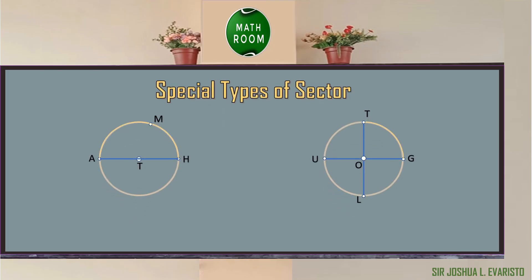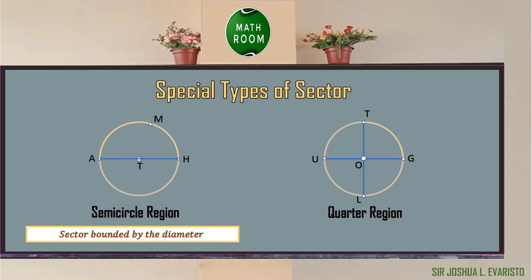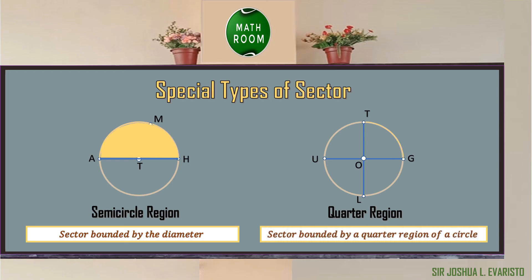We have two special types of sector: the semicircle region and the quarter region. The semicircle region is a sector bounded by the diameter. In figure 1, the yellow region is an example of a semicircle region bounded by angle ATH and arc AMH. In figure 2, the yellow region is an example of a semicircle region bounded by angle TOG and arc TG.